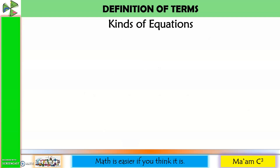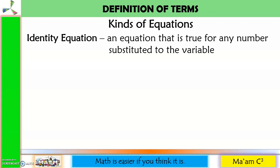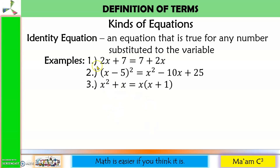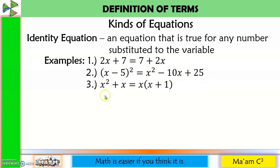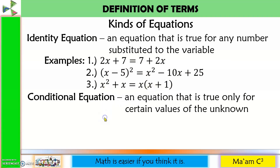Here are some kinds of equations. An identity equation is an equation that is true for any number substituted for the variable. In number one, the commutative property applies. In number two, the right-hand side is the expanded form of the left-hand side. In number three, the right-hand side is the factored form of the left-hand side.